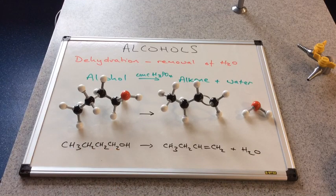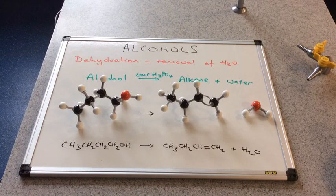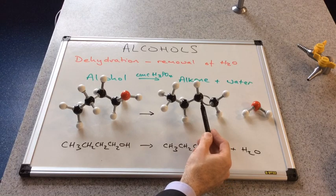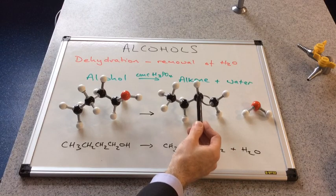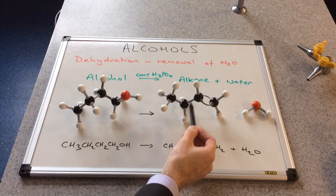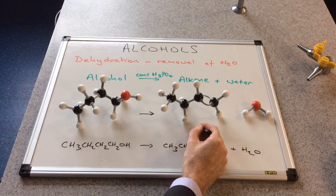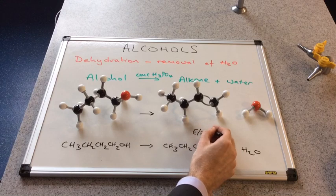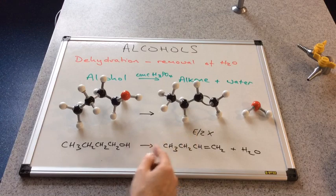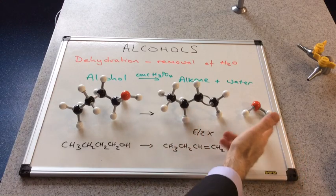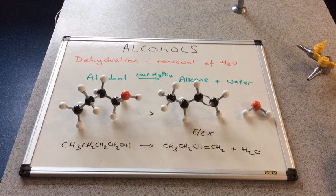Whenever you create an alkene as a product of a reaction, it's always a good idea to double check whether E/Z isomerism is going to be possible. On one carbon of the double bond we have a hydrogen and an ethyl group — they're different. On the next carbon we have two hydrogens — exactly the same as each other — so E/Z is not possible with this alkene. But-1-ene and water are the only possible products.